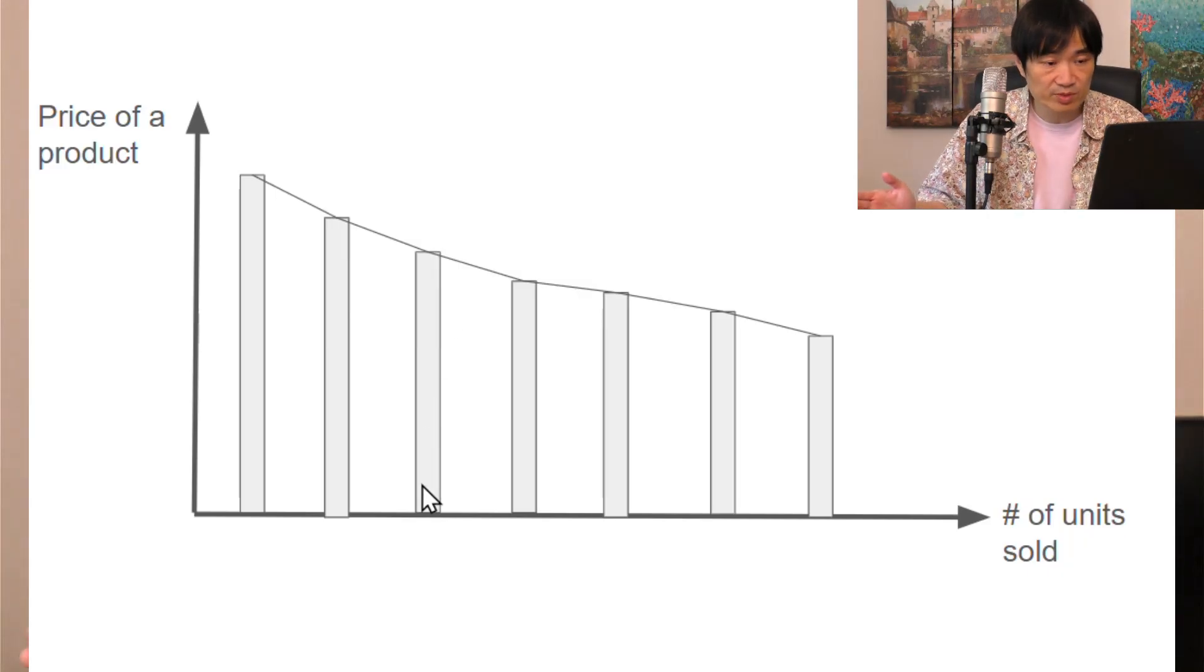Of course, different people have different evaluations of a product. It can depend on how much you love that product or how much your life requires it or how rich you are. But let's forget about the underlying reasons. We just need to know each customer assigns a different value to that product. So we line them up from high to low.